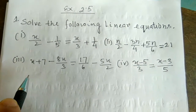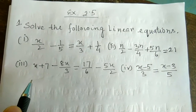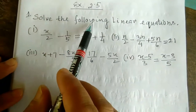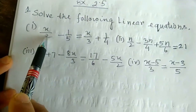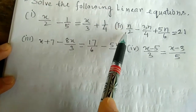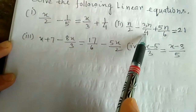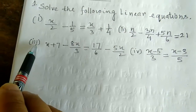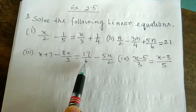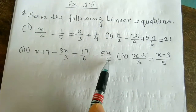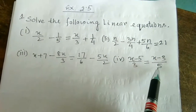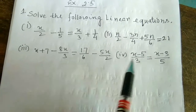Good morning. We are doing today Exercise 2.5, Class 8. Question number 1: solve the following linear equations. Number 1: x/2 - 1/5 = x/3 + 1/4. Number 2: n/2 - 3n/4 + 5n/6 = 21. Number 3: x + 7 - 8x/3 = 17/6 - 5x/2. Number 4: x - 5/3 = x - 3/5. These are the questions.